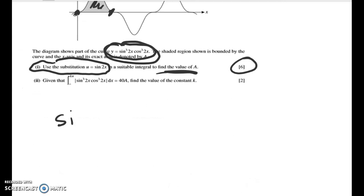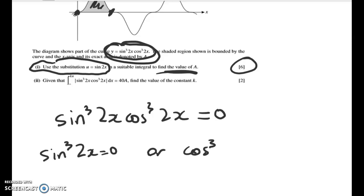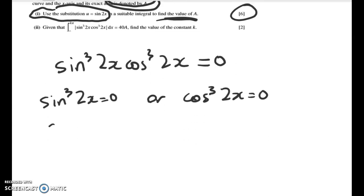So those limits are going to be whatever x values make this equal to 0. So the first thing I'll do is I'll solve sine cubed 2x, cos cubed 2x equals 0. And I'm looking for the first two solutions to this equation. So either sine cubed 2x equals 0 or cos cubed 2x is equal to 0.